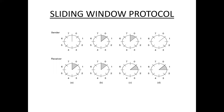In diagram A — the starting position — the receiver waits for frame 0, so 0 is shaded. In diagram B, the sender sends frame 0, so 0 is highlighted in the sending window.